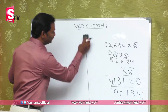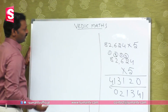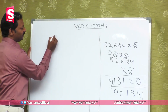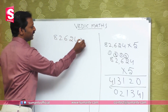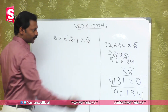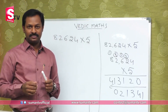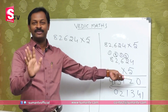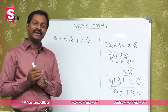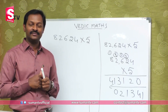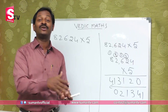Now let us use Vedic Maths. The number given is 82,624 multiplied by 5. In Vedic Maths we want to work with all four operations — addition, subtraction, multiplication, and division — to represent a number. We need to find a way to get 5 using these operations.